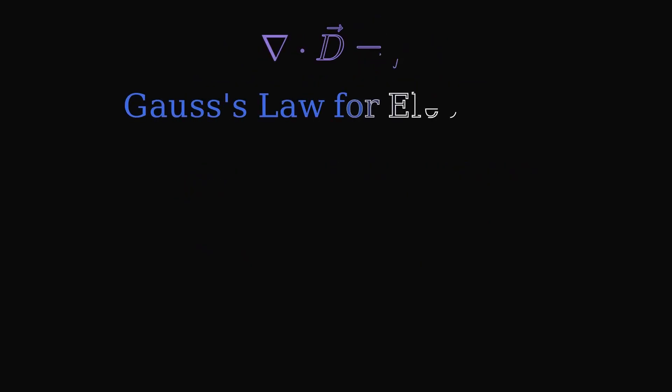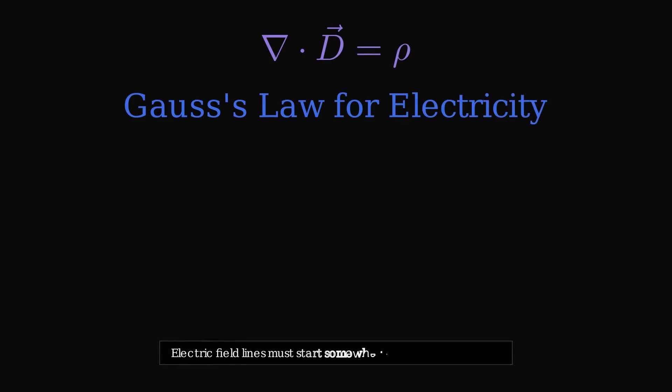Gauss's law for electricity tells us that electric field lines must start somewhere and end somewhere. Electric field lines flow from positive charges to negative charges, like water flowing from a spring to a drain.